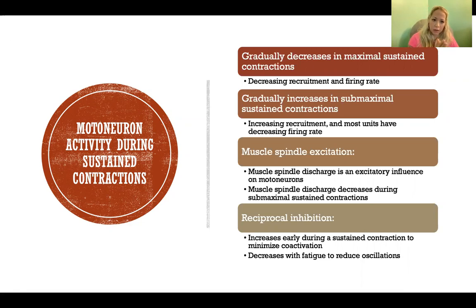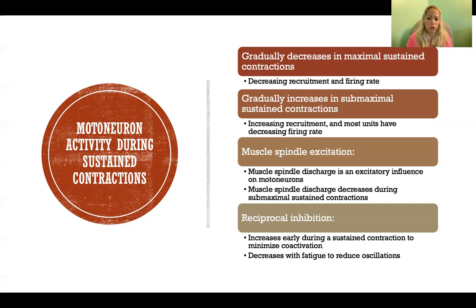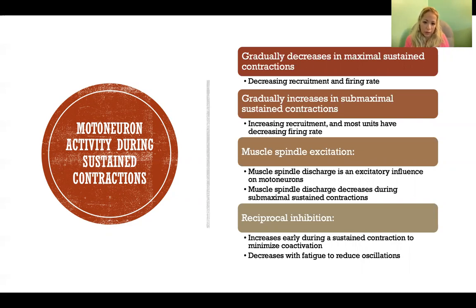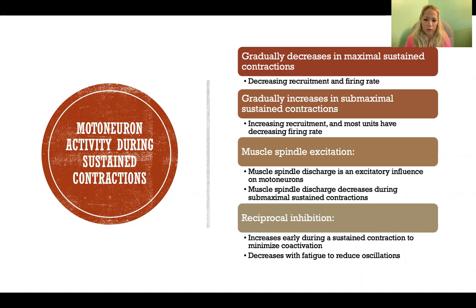If the muscle spindle detects too great a change in length — too much stretch or stretch happening too quickly — we can quickly have a contraction of that muscle to reduce the amount of stretch and protect against injury from stretching too far or too fast. So muscle spindle discharge is excitatory to the muscle containing those spindles. However, muscle spindle discharge actually decreases during submaximal sustained contractions — the longer we contract submaximally, the lower the frequency of muscle spindle discharge, decreasing the excitatory influence on that muscle.